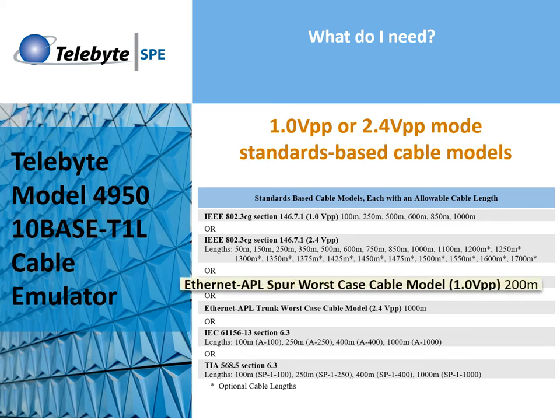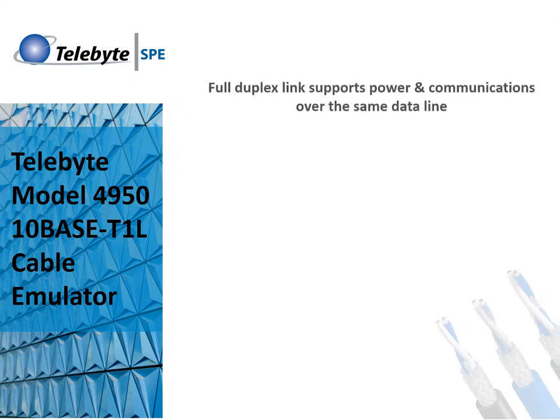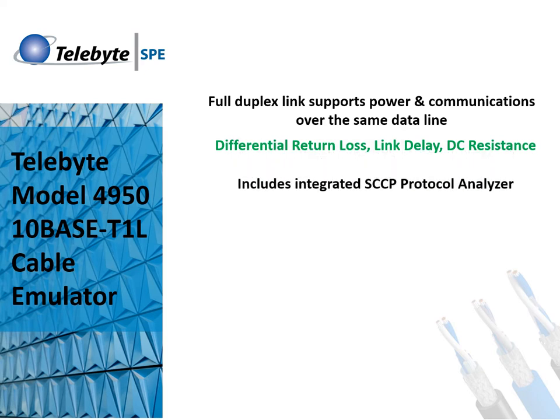Our example today will emulate the Ethernet APL Spur worst case cable model at 200 meters. Features include a full duplex link that supports power and communications over the same data line, differential return loss, link delay, DC resistance, and an integrated SCCP protocol analyzer.